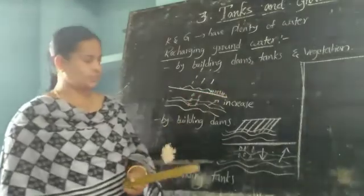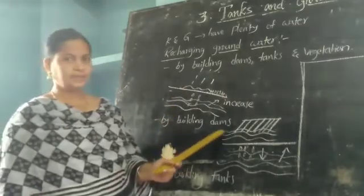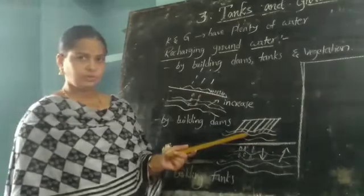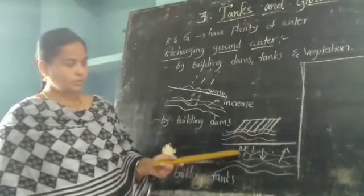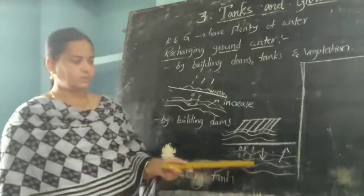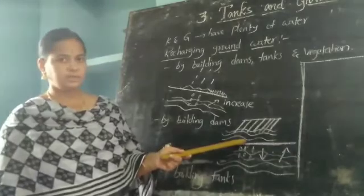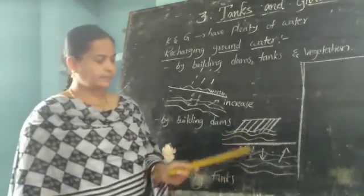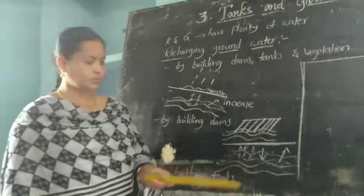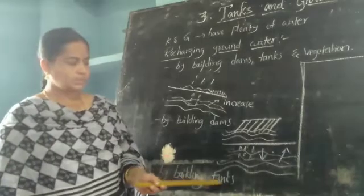We can also increase groundwater by building dams. When we store rain water in a dam, water slowly percolates into the soil and joins the groundwater, increasing groundwater levels. Similarly, by building tanks we can also recharge groundwater — when rain water is stored in a tank, water slowly percolates into the soil and the groundwater levels will increase.